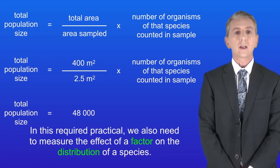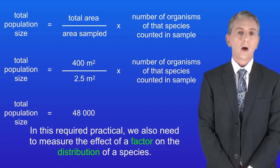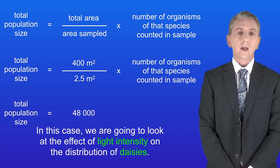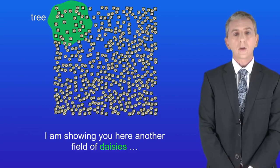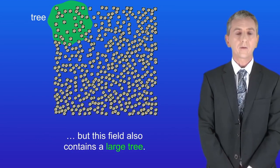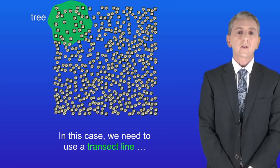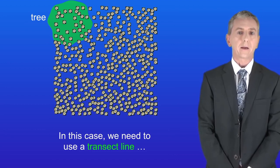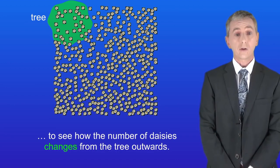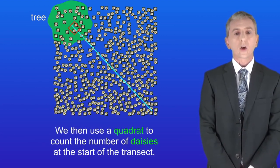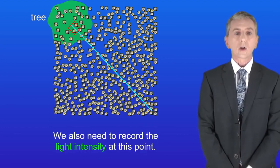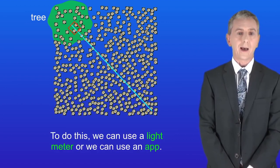In this required practical we also need to measure the effect of a factor on the distribution of a species. In this case we're going to look at the effect of light intensity on the distribution of daisies. In a field containing a large tree, we use a transect line to see how the number of daisies changes from the tree outwards. We place a tape measure at the tree, then use a quadrat to count the number of daisies at the start of the transect, and also record the light intensity using a light meter or an app.